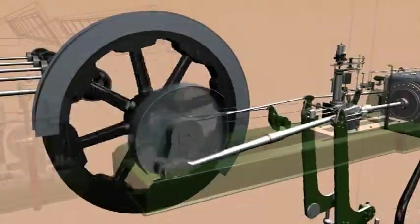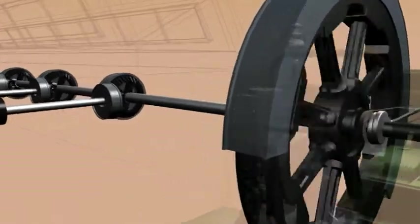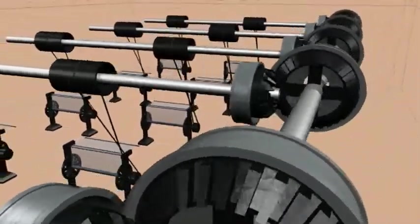The flywheel smooths out the push-pull thrust of the engine. The crankshaft continues through the flywheel and transmits the power created through the line shafting to the machinery.